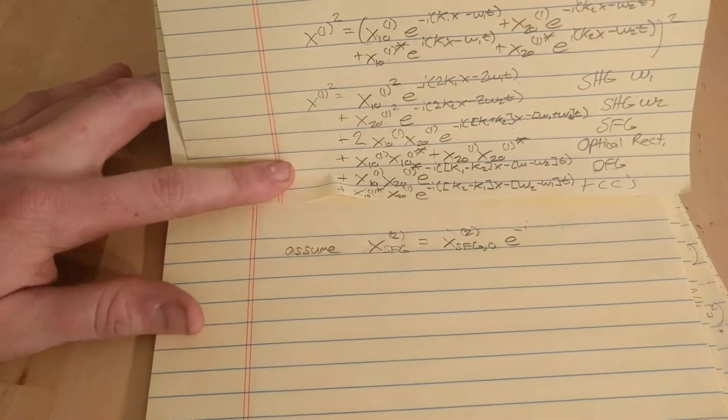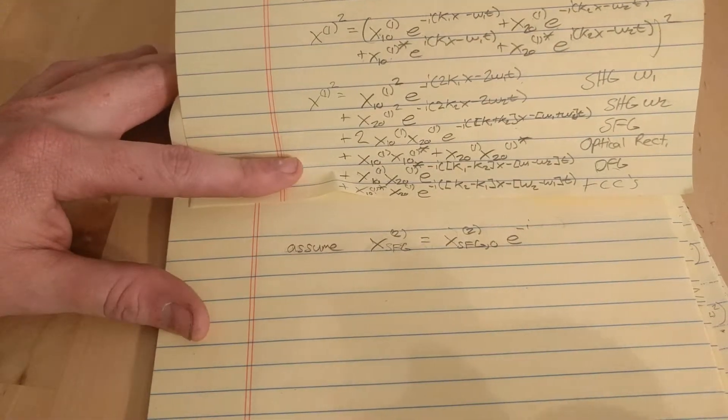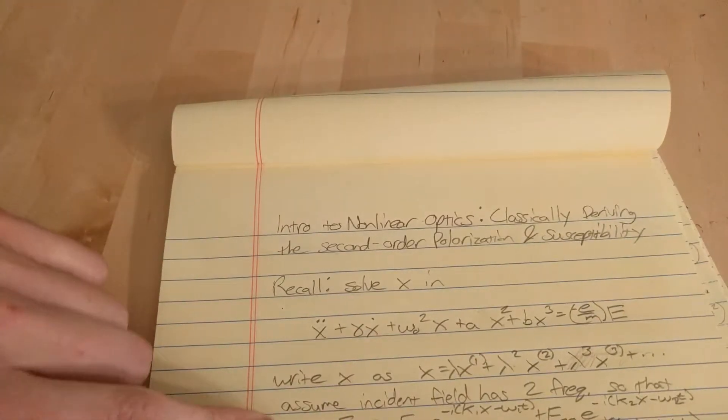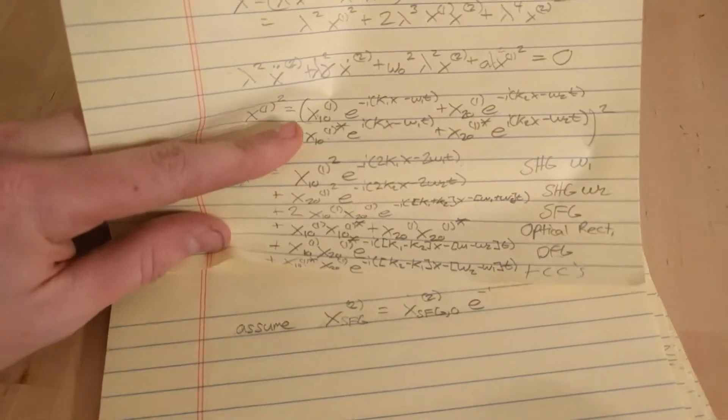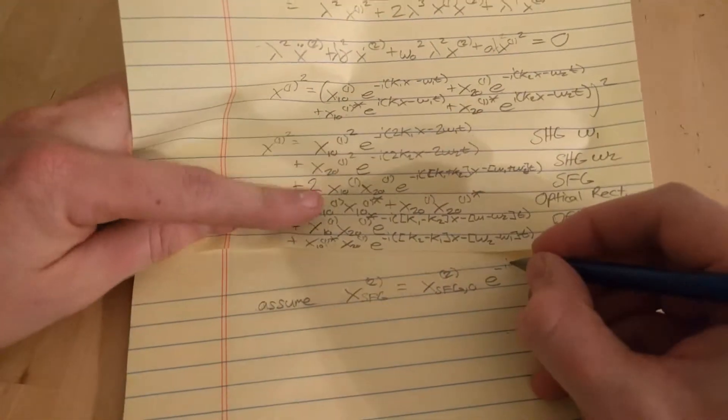The exponential part is going to look exactly the same as this exponential part, because when we plug it into our main equation—this equation here—then the exponents are going to cancel. So that's why we're assuming a form like this.